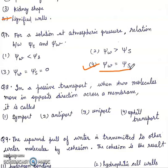Question 8: In a passive transport, when two molecules move in opposite direction across a membrane, it is called first symport, second antiport, third uniport, fourth uphill transport. Right answer will be second, antiport.